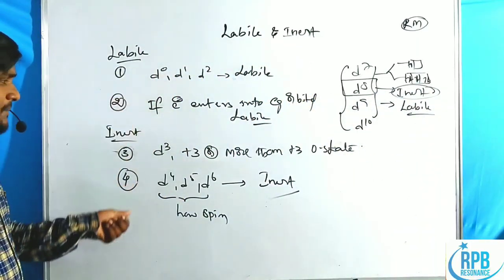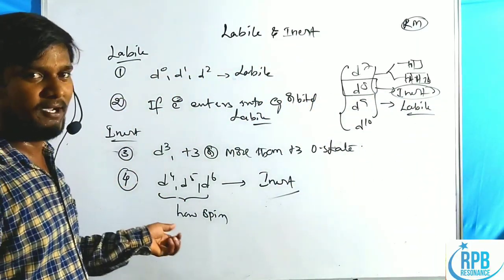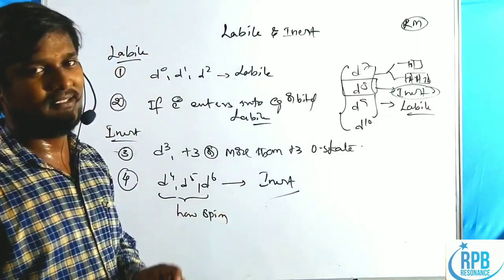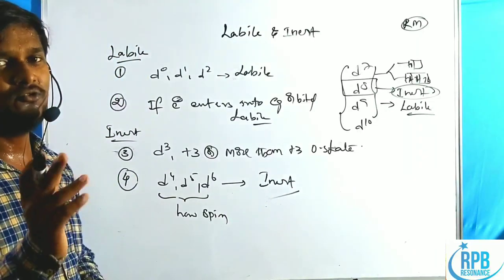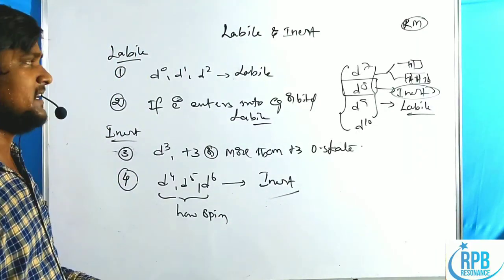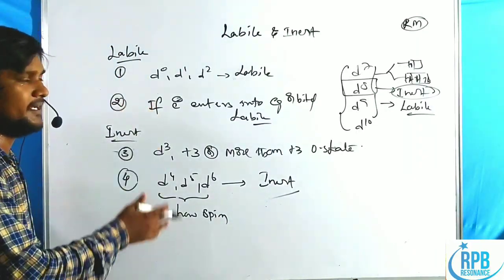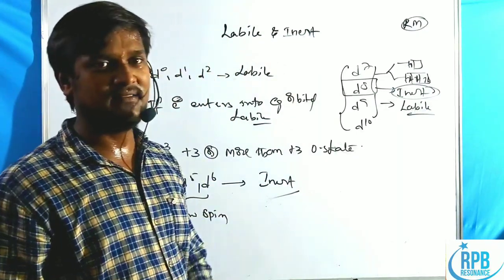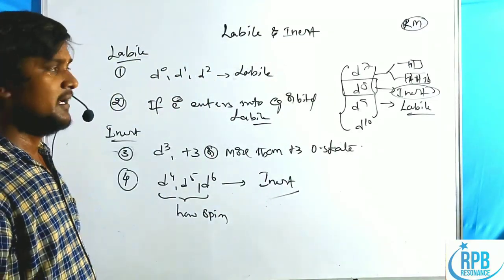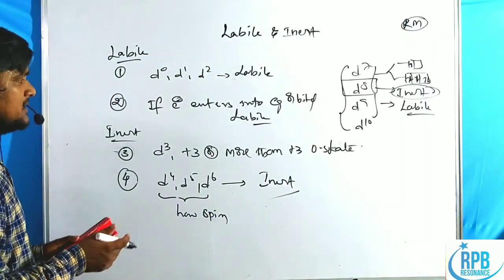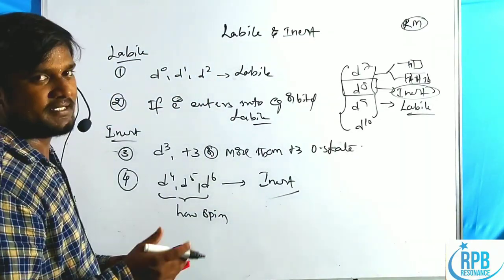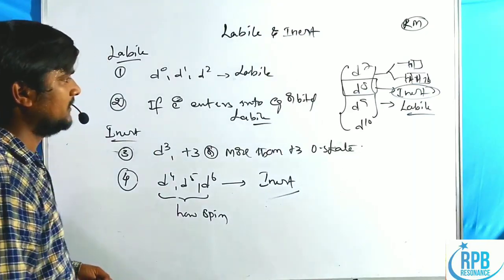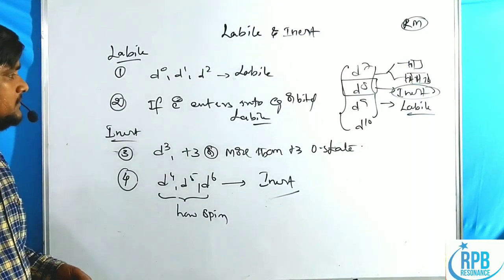Now, how are these complexes labile or inert according to our theories? Two theories explain the lability and inertness of complex compounds: one is VBT (valence bond theory) and another one is crystal field theory.